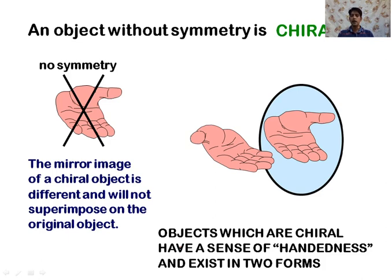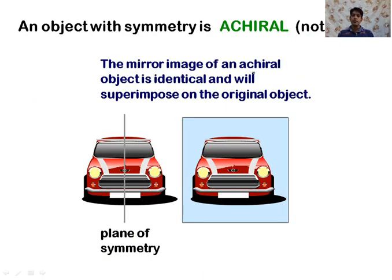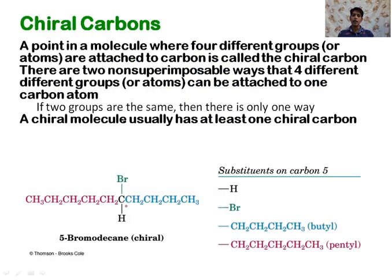A very simple example of a chiral object is our hand. Our hand has handedness — both sides are not equal, it does not have any plane of symmetry, and it does not superimpose on its mirror image. Hence, our hand is a chiral object. In contrast, a car has a plane of symmetry, so its mirror image will superimpose on it — hence it is an achiral object.